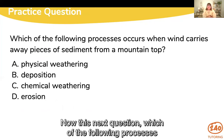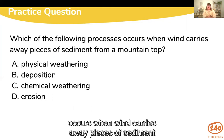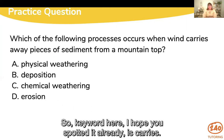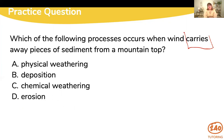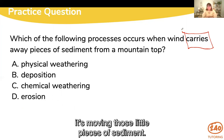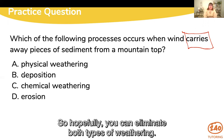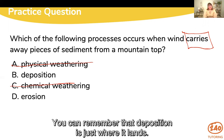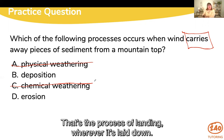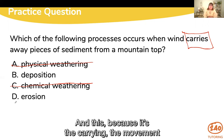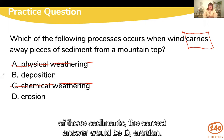Now this next question: which of the following processes occurs when wind carries away pieces of sediment from a mountaintop? The keyword here is carries — the wind is carrying, it's moving those little pieces of sediment. So hopefully you can eliminate both types of weathering. Deposition is just where it lands — the process of laying it down. Because it's the carrying, the movement of those sediments, the correct answer would be D, erosion.